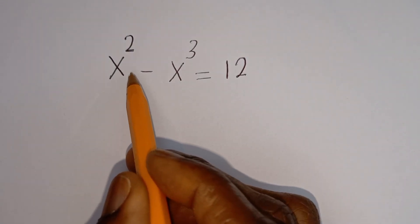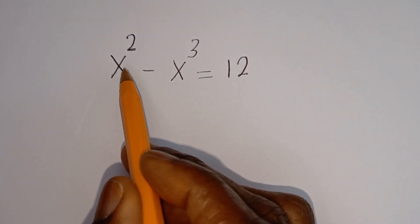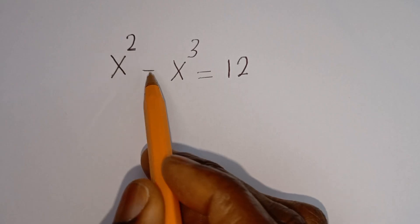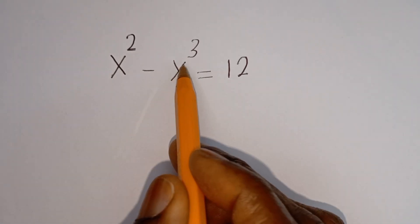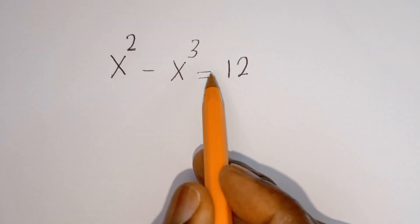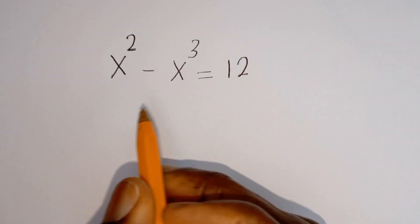Hello. How to solve for S in this equation: S squared minus S to the power of 3 is equal to 12.